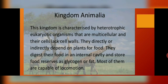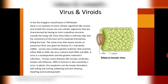Kingdom animalia is characterized by eukaryotic, heterotrophic nature. All members are multicellular and do not show the presence of a cell wall. The outer membrane of their cells is known as a plasma membrane. They digest their food in an internal cavity and store food reserves in the form of glycogen or fat. Most of them are capable of locomotion.